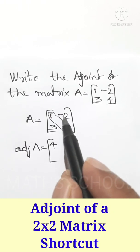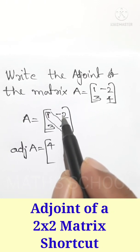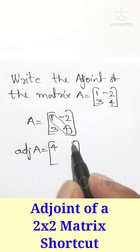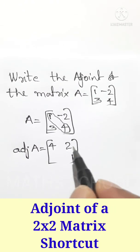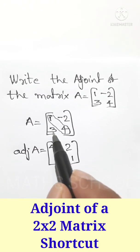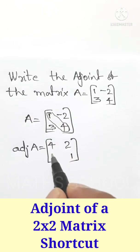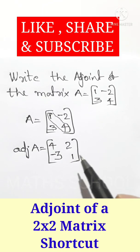Now change the sign of the other two elements. Here it is negative 2. Changing its sign it is positive 2. And change the sign of this 3. Changing its sign we get negative 3.